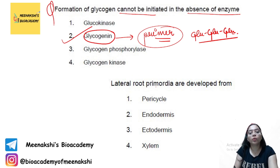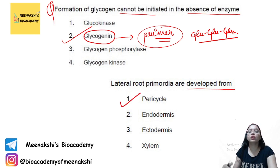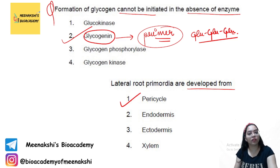The next question: lateral root primordia are developed from which primary root tissue? The answer is the pericycle — lateral root primordia development occurs from the pericycle.